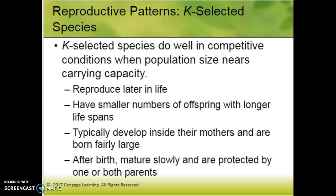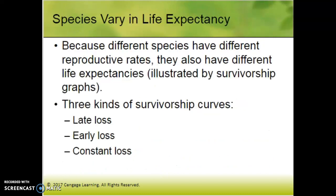Moving on to K-selected species — humans are a good example. K species do well when you're nearing carrying capacity, which we are as humans. They reproduce later in life, have few offspring, and spend a ton of energy, time, and resources making sure those few offspring survive. I'm not planning on having a million kids; I'll have two and do everything I can to make sure they make it to adulthood. Just a different strategy.